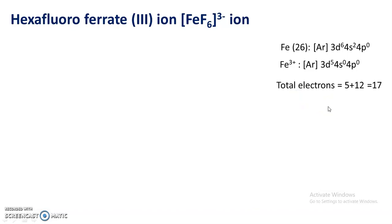All together, there are 17 electrons available to fill the molecular orbitals of the hexafluoroferrate(III) ion. Five electrons are contributed by Fe³⁺, and 12 electrons are contributed by the 6 F⁻ ligands — each F⁻ ligand contributes a pair of electrons, so 2 × 6 = 12. In total, there are 17 electrons.